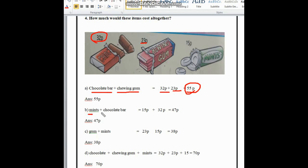Here is mints and chocolate bar. Mints is 15 and chocolate bar is 32. We add 15 plus 32 and get 47p.